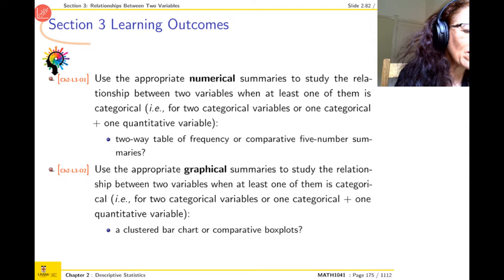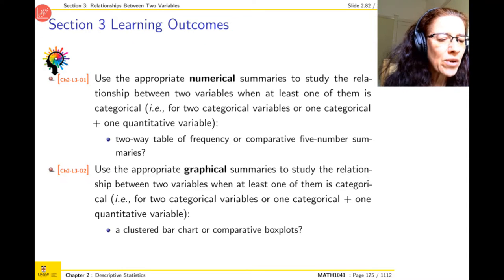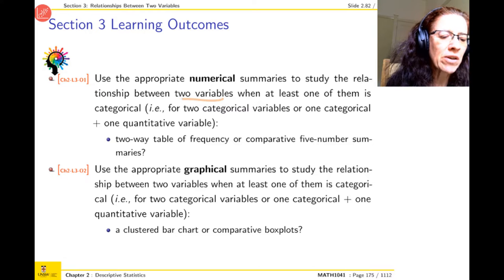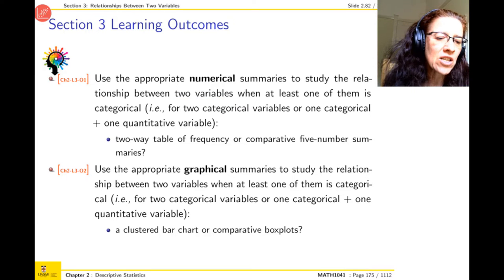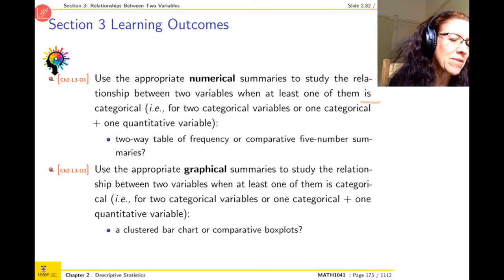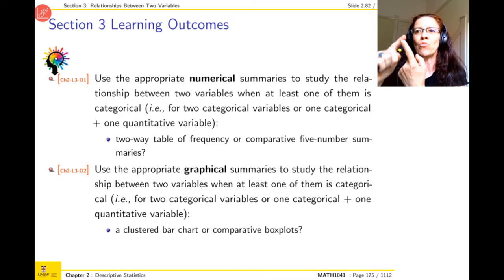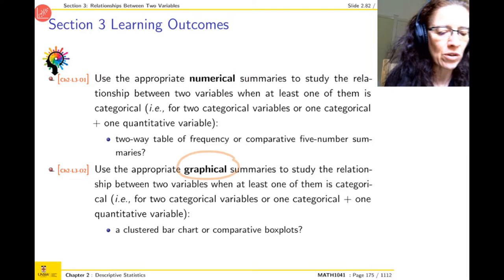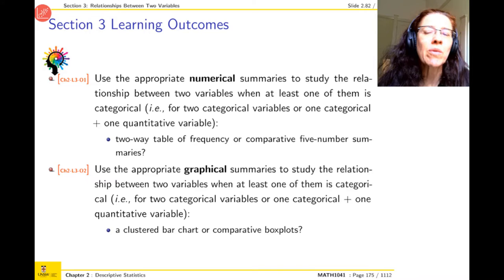The learning outcome for this section: you will need to learn to use the appropriate numerical summary to study the relationship between two variables. For now we will restrict ourselves to the case when at least one of them is categorical — so that could be one categorical and one quantitative, or two categorical ones. We'll do that for numerical summary and also for graphical summary. Later on we will deal with the case when both of them are quantitative.